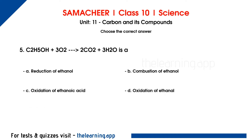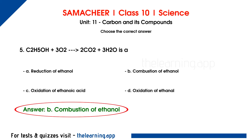Fifth question. C2H5OH + 3O2 gives 2CO2 + 3H2O is a dash. Options are A. Reduction of ethanol, B. Combustion of ethanol, C. Oxidation of ethanoic acid, D. Oxidation of ethanol. Correct answer is option B, combustion of ethanol.